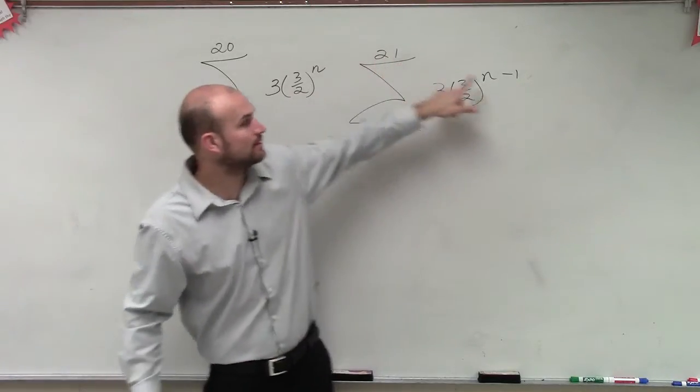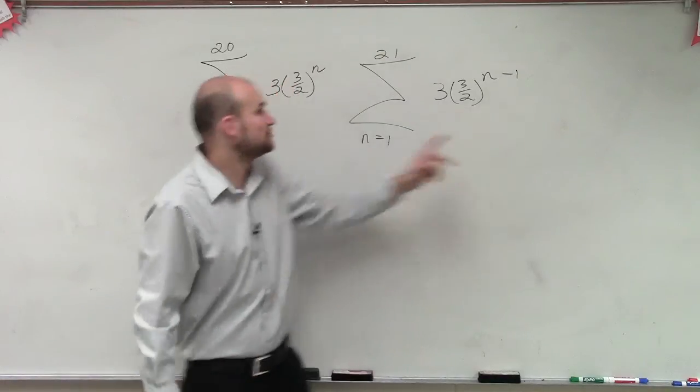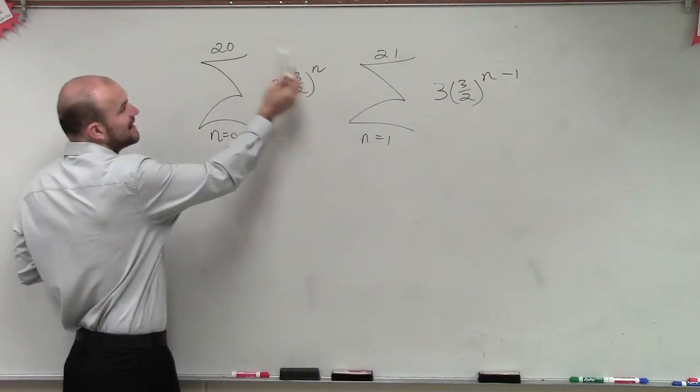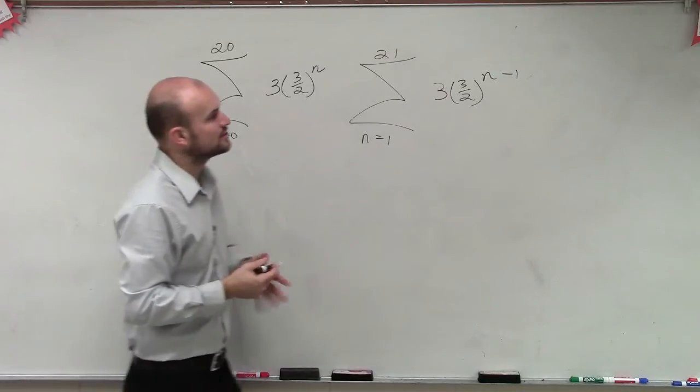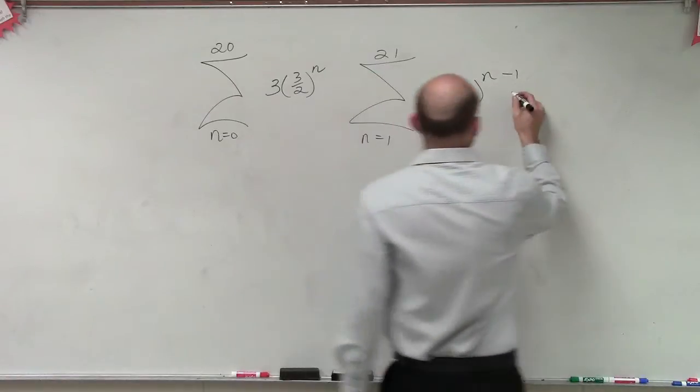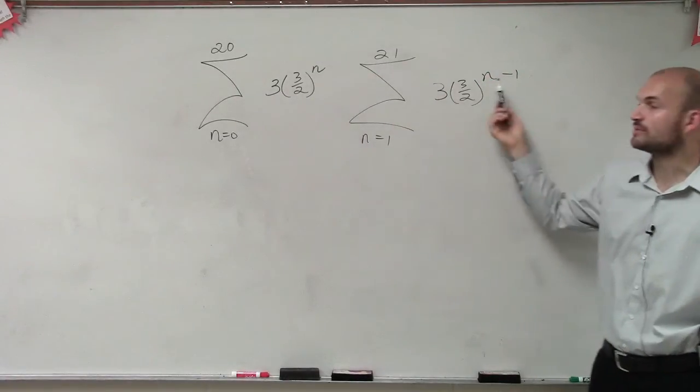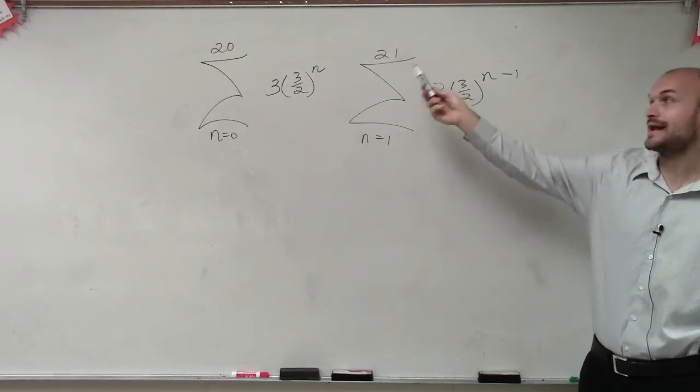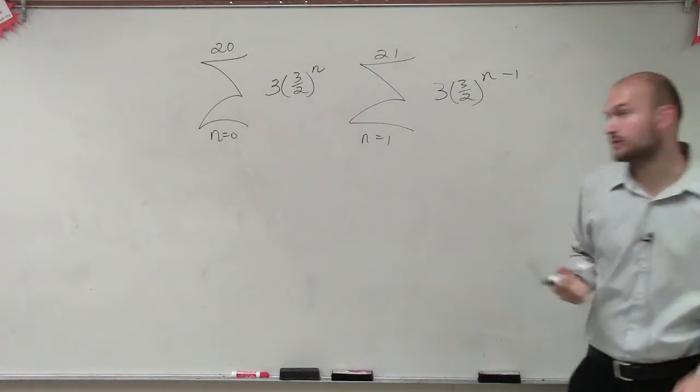And then when I put in my last term, 21, is 21 minus 1 till 20, which would be the exact same thing as me putting my last term 20 in for there. Does that make sense? OK. So now we have our series. And now you guys can know that you're adding up every single term. You're starting with 1, evaluating that, adding that up all the way to 21. We don't want to calculate all that stuff. Let's go ahead and use our rule.